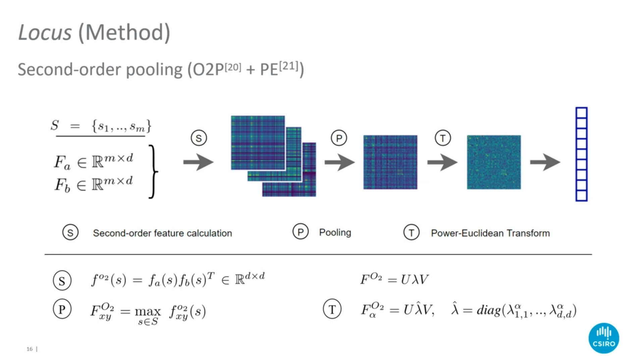The power Euclidean nonlinear transform acts on this matrix by raising each of its singular values by a power of alpha to generate a more discriminative scene representation.